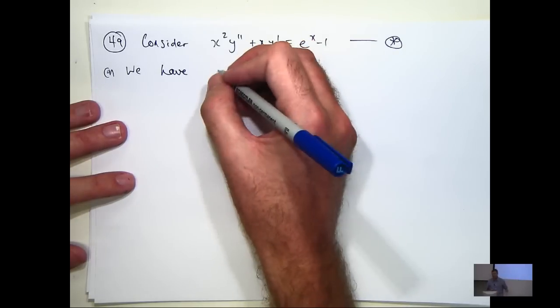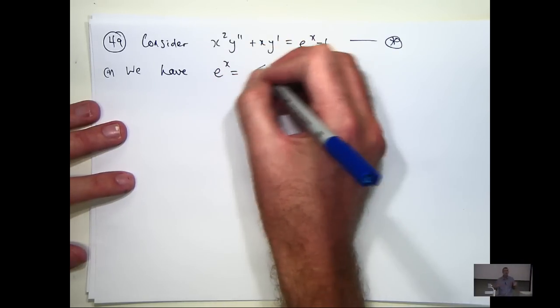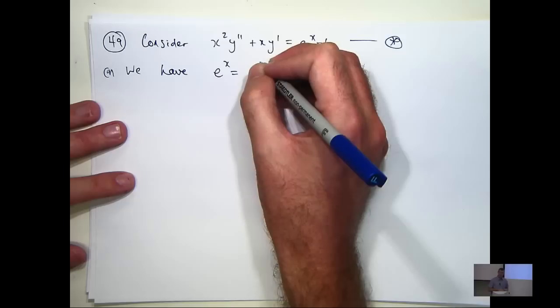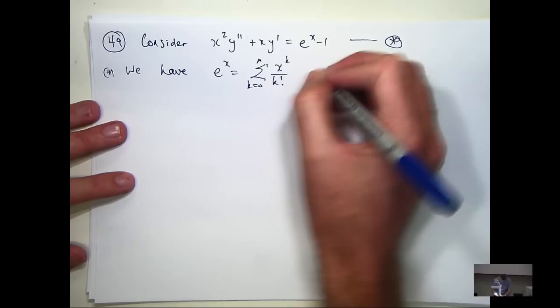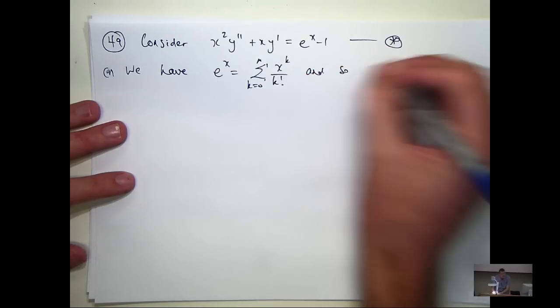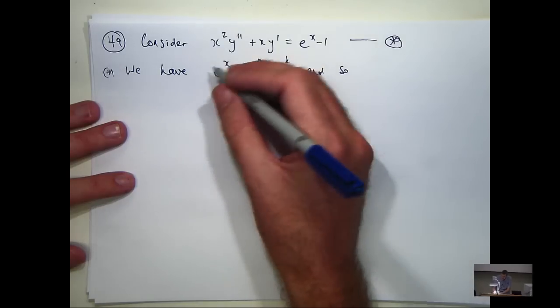So we know e^x is just this. And so if you just take out the first term and move it to the other side,